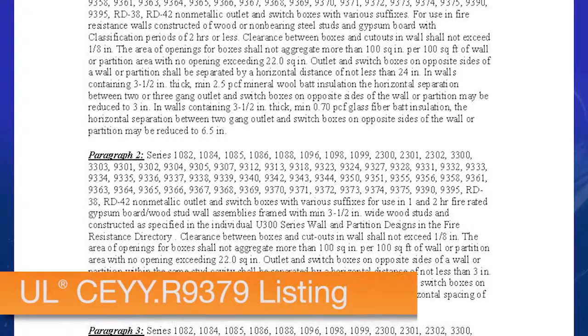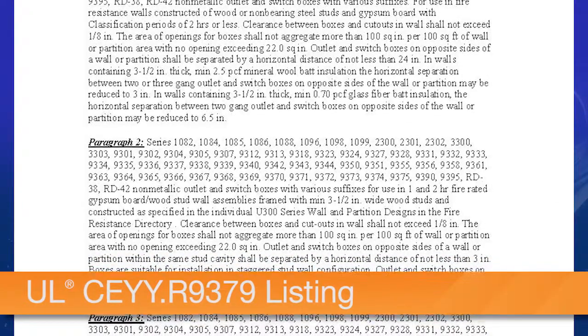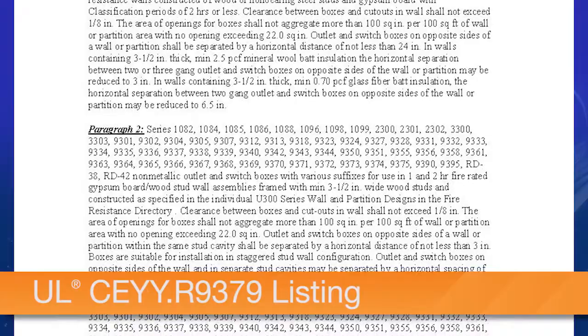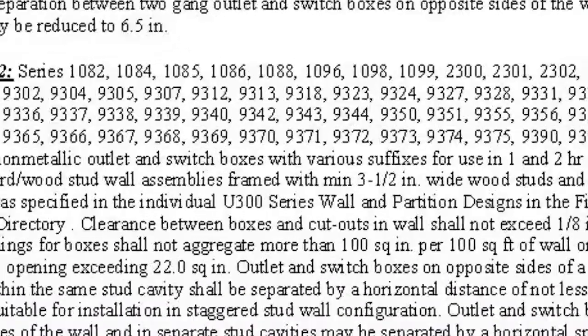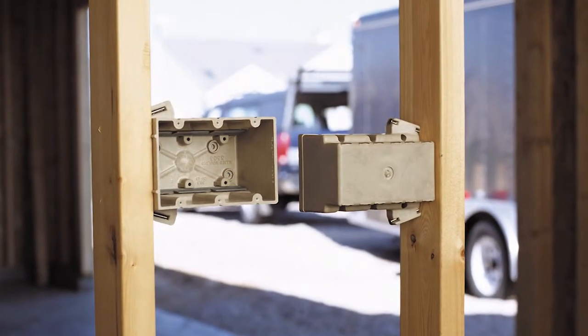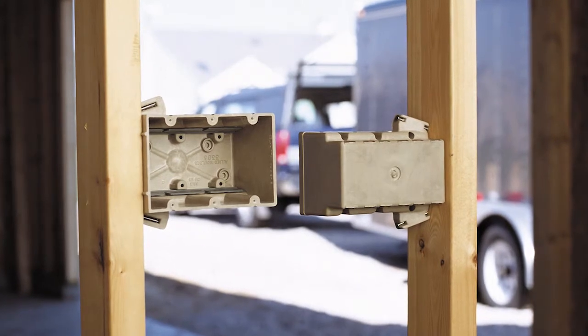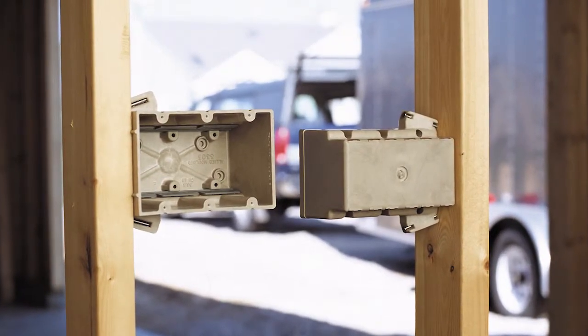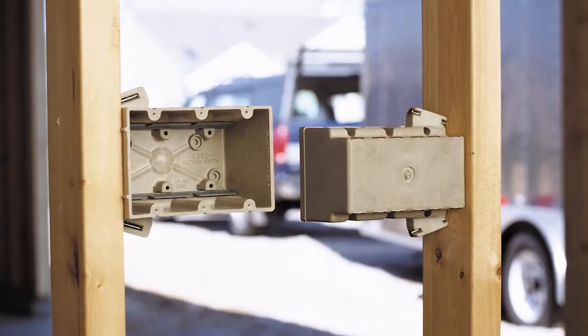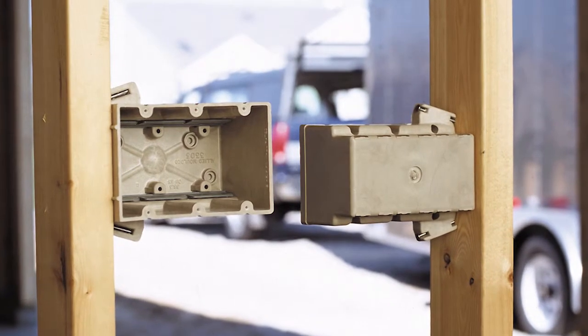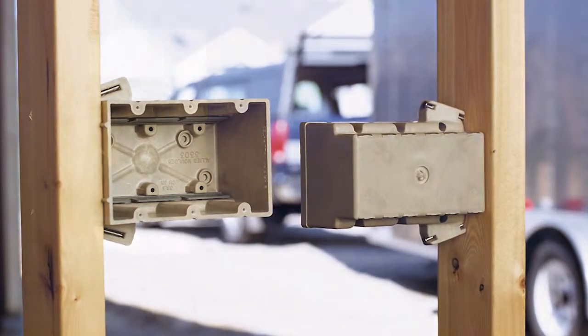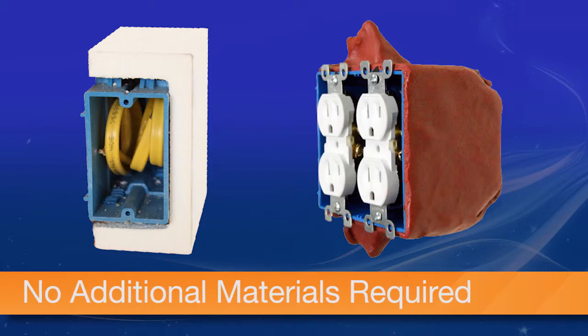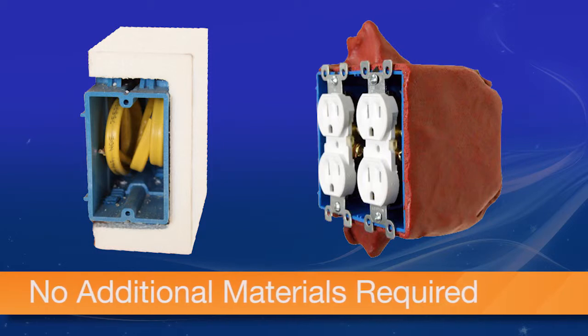Cited in paragraph 2 of our UL CEYY.R9379 listing, our series of fiberglass wall boxes up to and including two to three gangs can be safely mounted in the same stud cavity on opposite sides of the wall and within three inches horizontally in all U300 series wall configurations without the use of additional fire protection like putty pads, mineral wool or insulations.